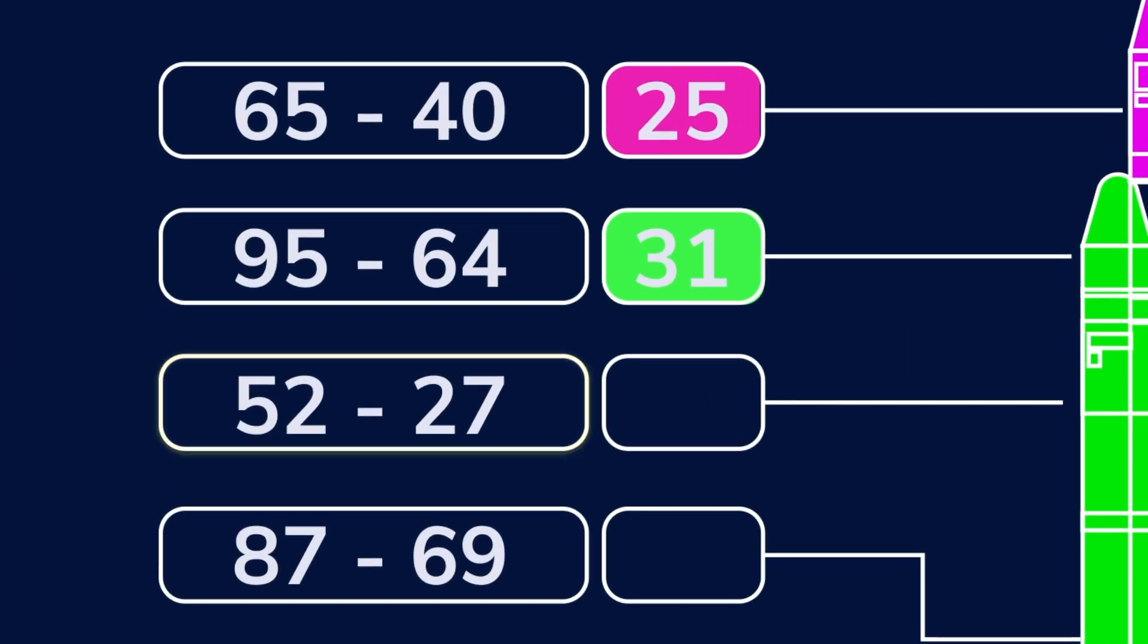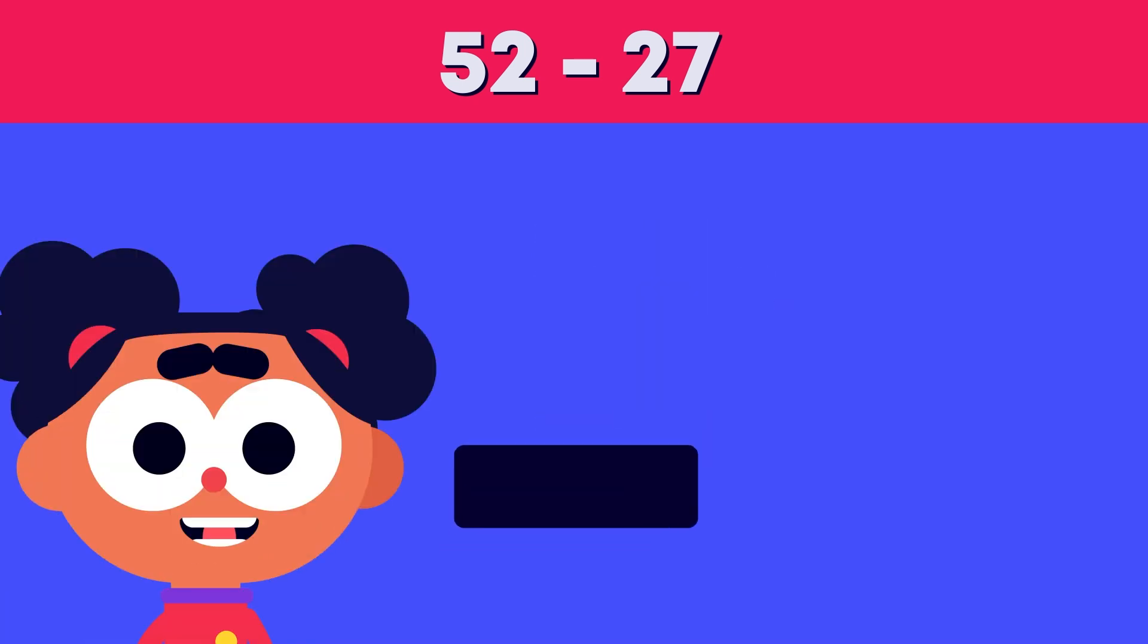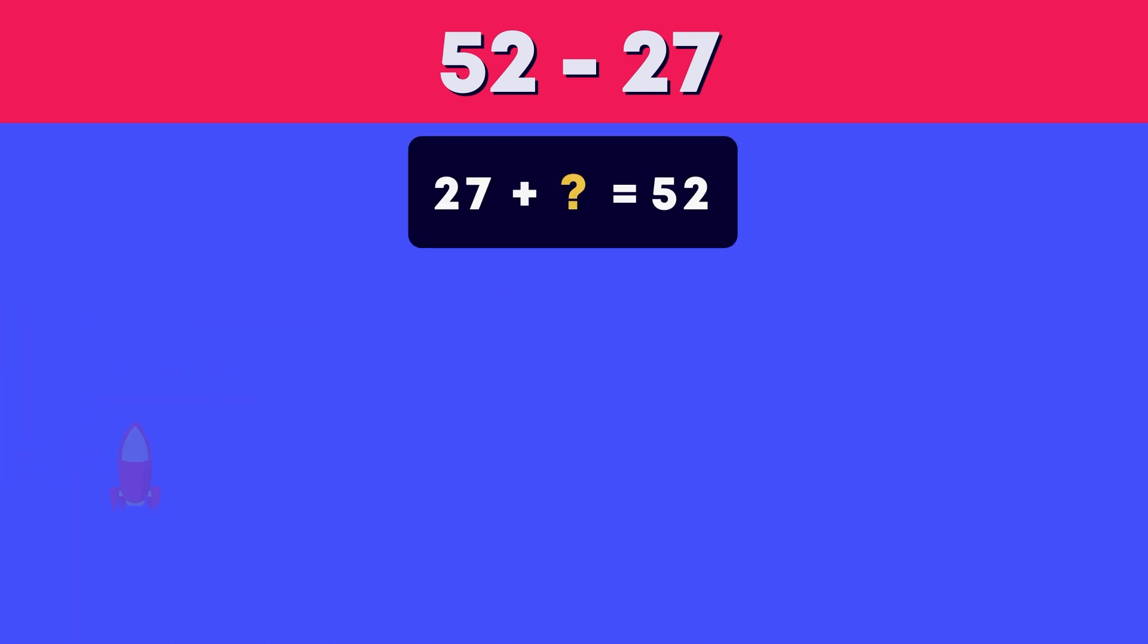Now we need to find the answer to 52 minus 27. The number of ones in the first two-digit number is less than the number of ones in the second number. We can think 27 plus what equals 52. Let's use a number line to help us. We put 27 on the left and 52 on the right.